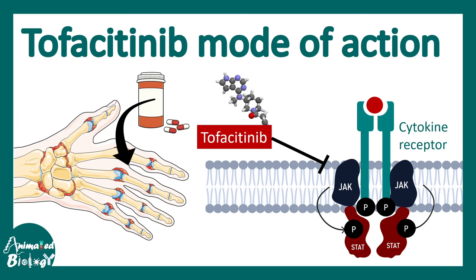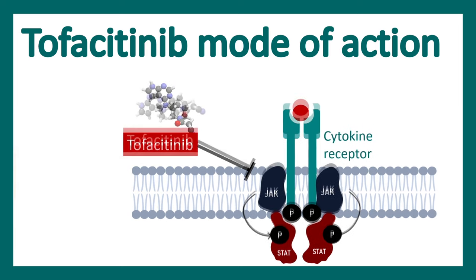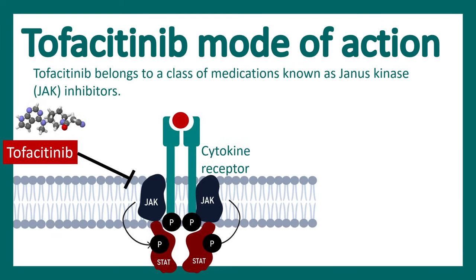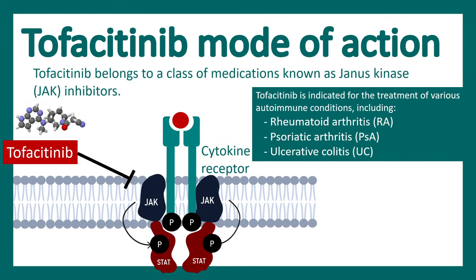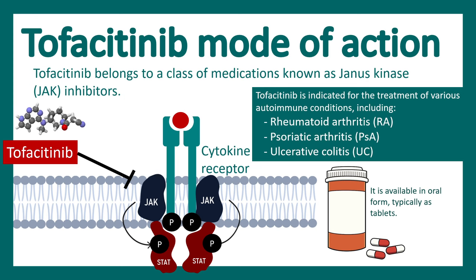In this video we'll be talking about the JAK-STAT pathway inhibitor tofacitinib, which is frequently used for treatment of several rheumatic diseases like rheumatoid arthritis, psoriasis, or ulcerative colitis. This particular molecule inhibits the JAK-STAT pathway. It is an oral medication which is very efficient, so let's talk about this in a bit more detail.